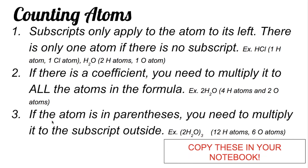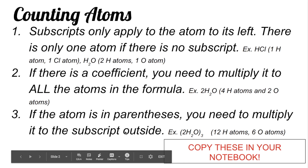Rule number three, the last one: if the atom is in parentheses, you need to multiply it by the subscript outside. For example, you have 2H2O all enclosed in parentheses, and there's a subscript of 3 outside. Remember: the subscript only applies to the atom to its left, and the coefficient is applied to all the atoms in your formula. Since all of these are enclosed in parentheses and there is a subscript of 3, that subscript of 3 is also applied to everything inside your parentheses.